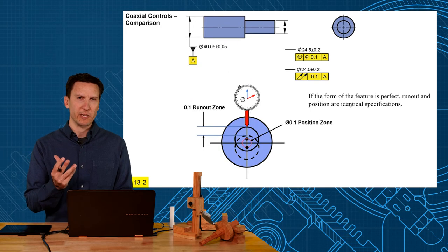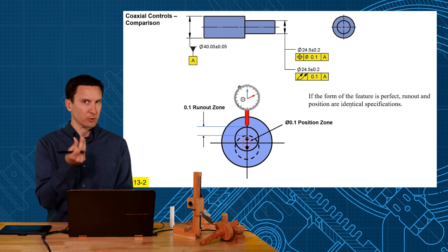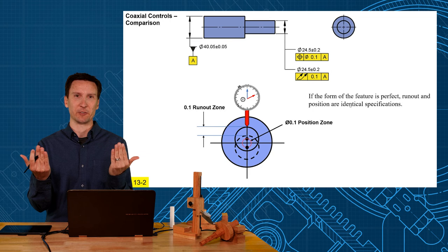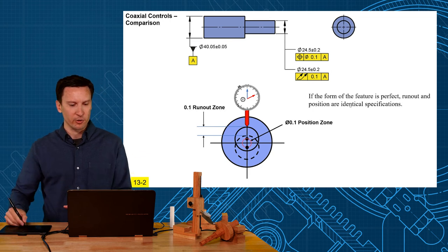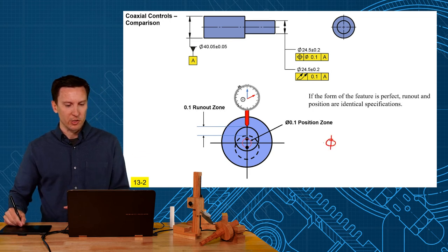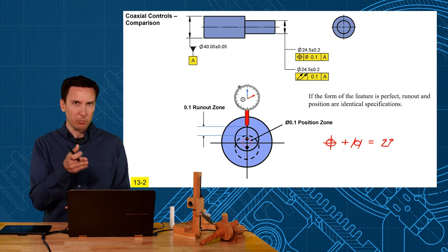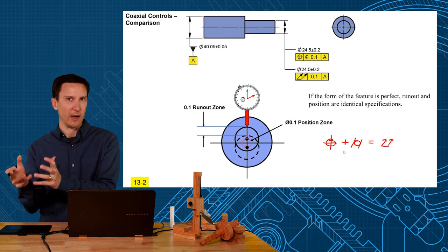So what I'm trying to show with this picture is that if the form of the feature is perfect, perfectly round cylindrical things, then run-out and position are identical specifications. Here's a good formula for you: that a position plus a cylindricity is equal to your total run-out. So that means the location plus your form is what run-out is really measuring.